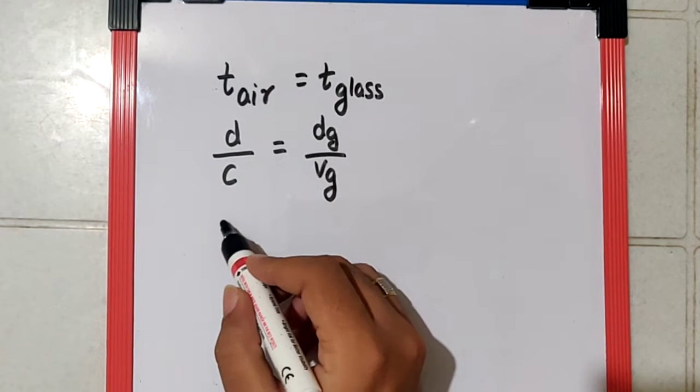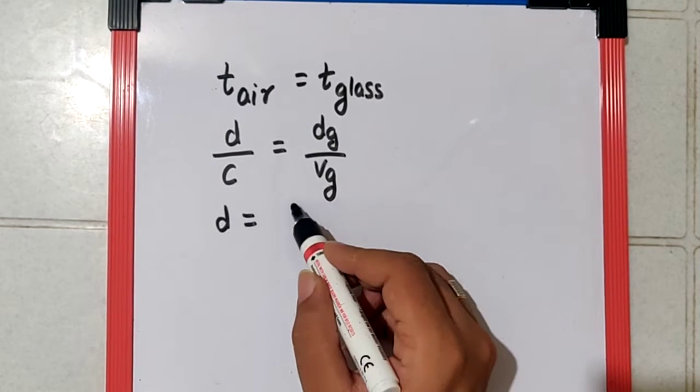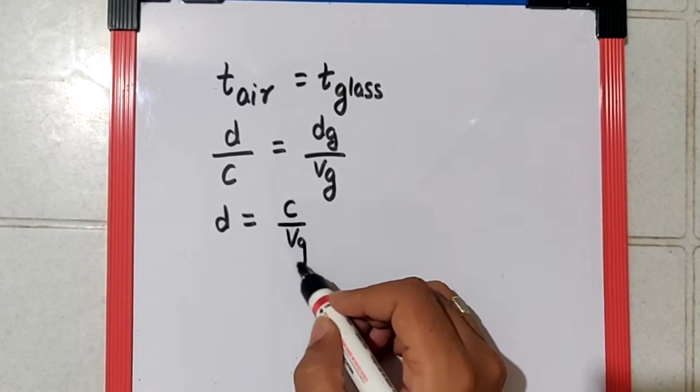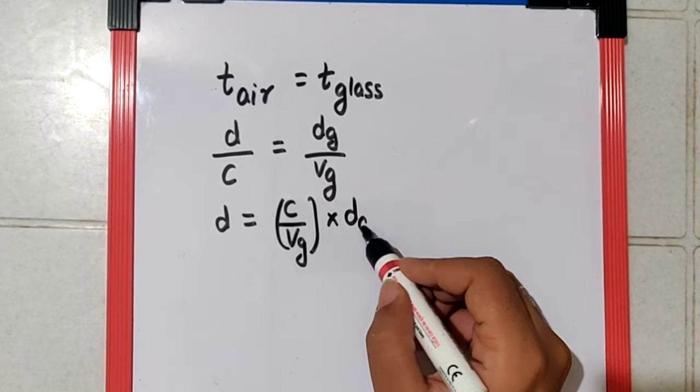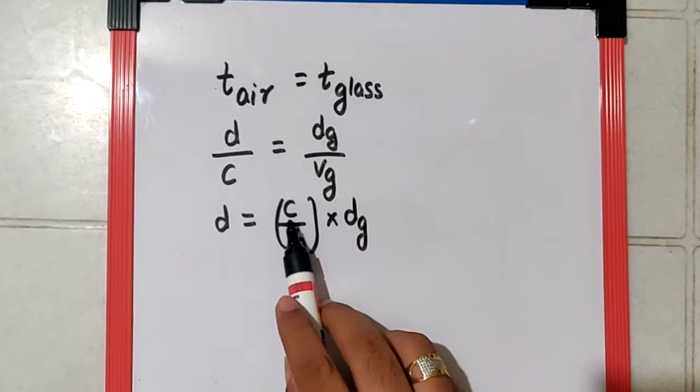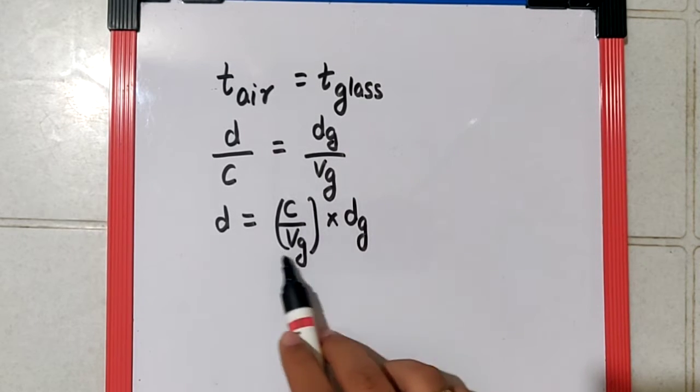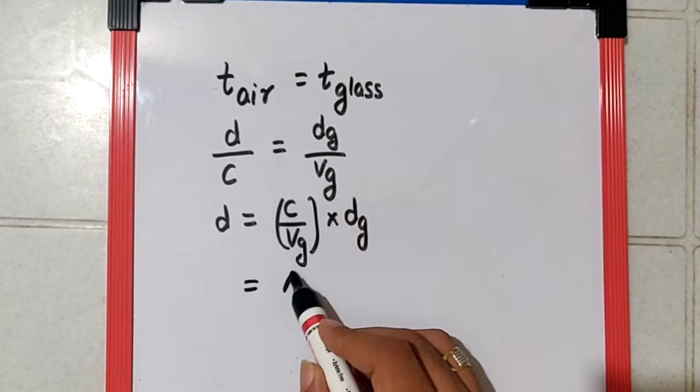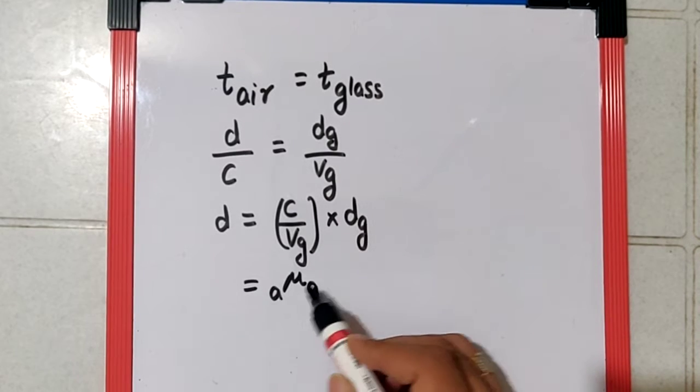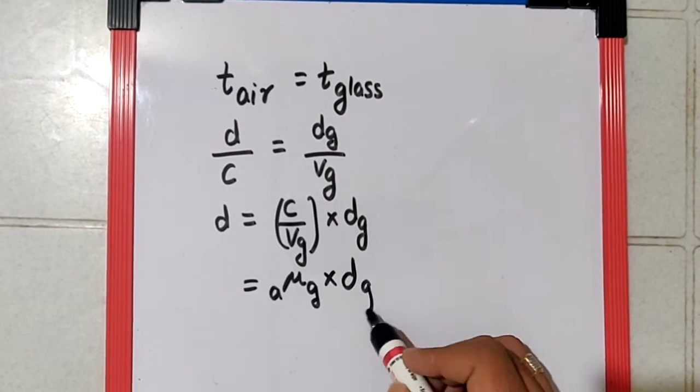Now we can say d, which we're supposed to find, is going to be c upon v_g, the whole into distance covered in glass. Now speed of light in air upon speed of light in a medium is nothing but the refractive index of the medium. So I can say this is μ of glass with respect to air into the distance covered in glass.